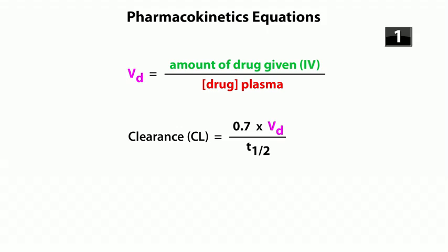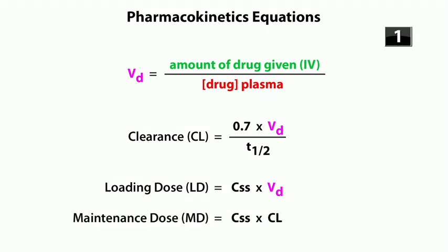Clearance is 0.7 times the volume of distribution divided by the half-life. The loading dose equals the concentration at steady state times the volume of distribution (LD = Css × Vd). And maintenance dose equals the concentration at steady state times clearance (MD = C × CL).